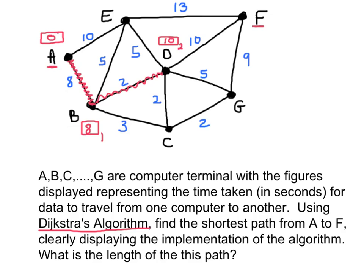On the third search, the algorithm looks out from A, B, and D, calculating combined weights and choosing the smallest. It has: A→E = 10, B→C = 11, B→E = 13, D→E = 15, D→F = 20, D→G = 10 plus 5 = 15, and D→C = 10 plus 2 = 12. The smallest is A→E, which is still 10, so the algorithm travels from A to E. I label E with the value 10 and put a little 3 here to indicate it's the result of the third search.